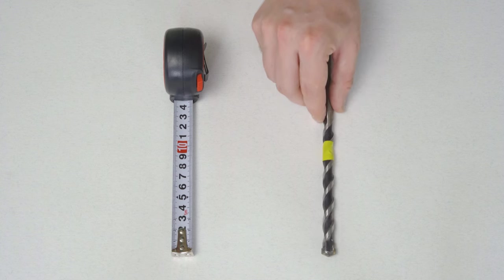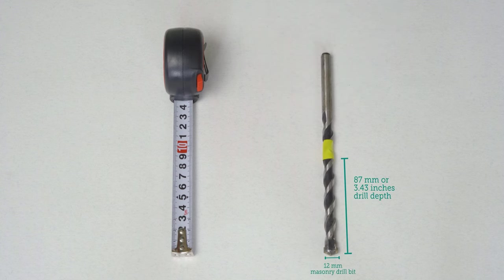We use an impact or hammer drill along with a 12 mm masonry drill bit. To ensure accurate drilling depth, you can mark the 87 mm drilling depth on the drill bit using tape.